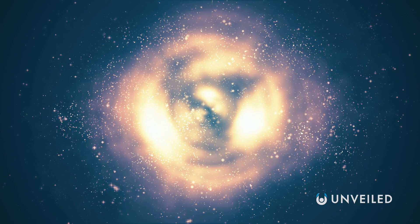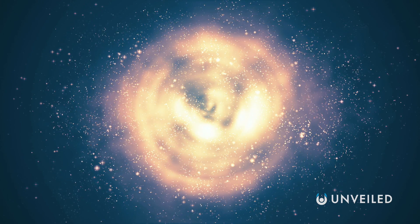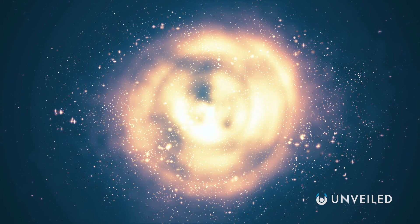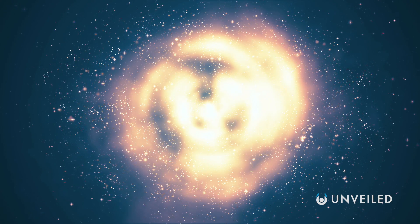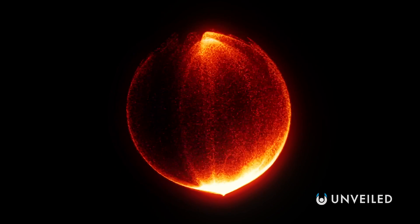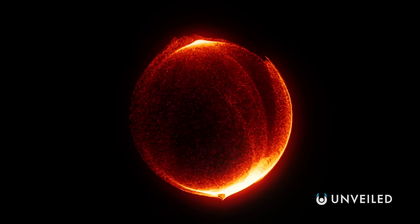Thankfully, it is impossible for this to happen, since our sun has nowhere near enough mass to even become a regular black hole when it dies, let alone a supermassive one. Instead, our star will turn into a red giant and eventually fizzle out.